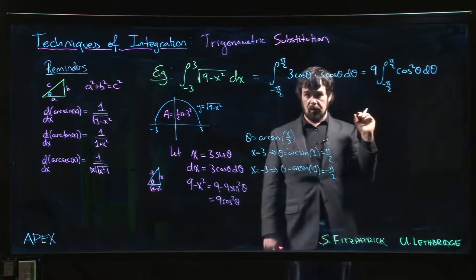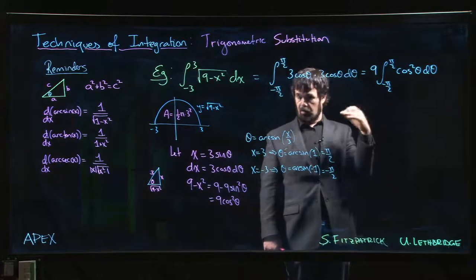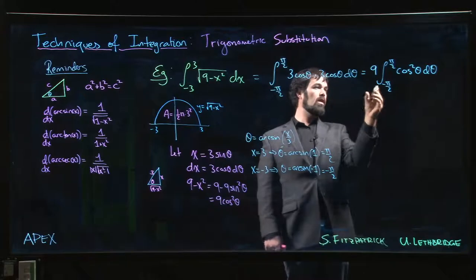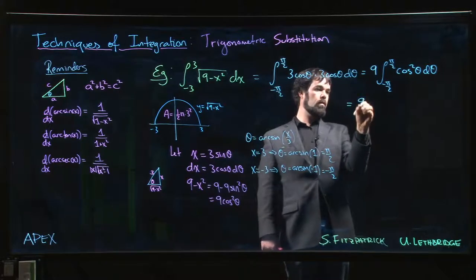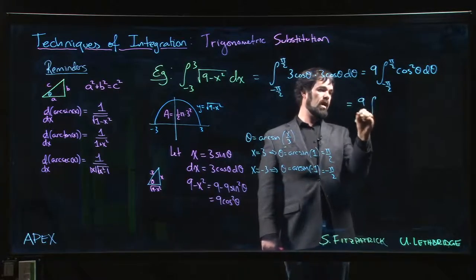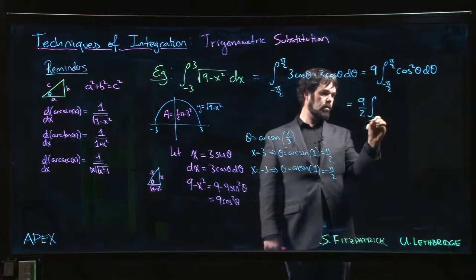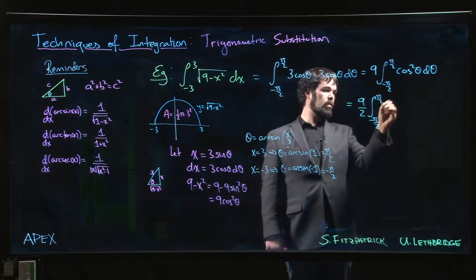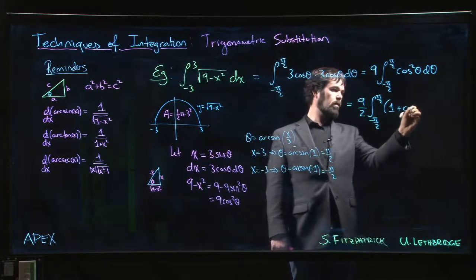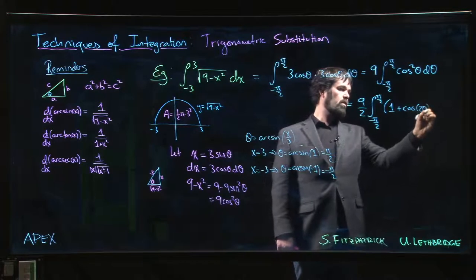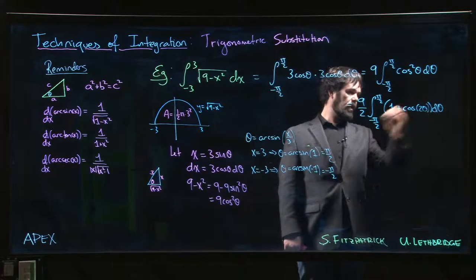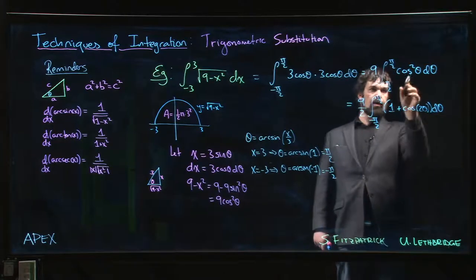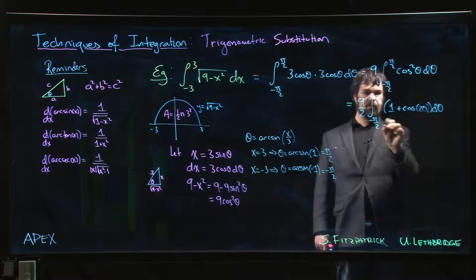And we recall from the last section that if you have an even power of cosine, or sine for that matter, we need to use an angle reduction formula. We need to use the fact that cos squared can be written as, so it's 1 half. I'm going to pull the 2 out front. So it's 9 over 2 integral from minus pi over 2 to pi over 2 of 1 plus cos 2 theta.